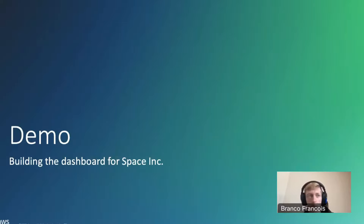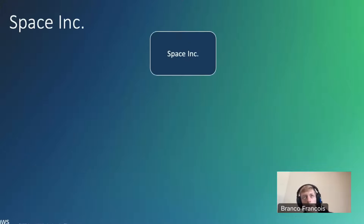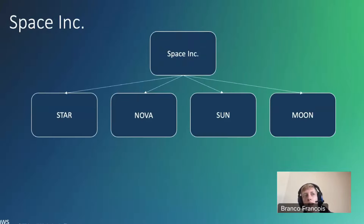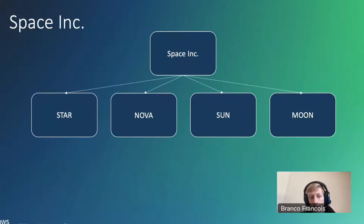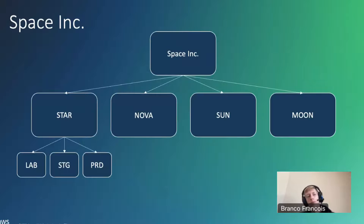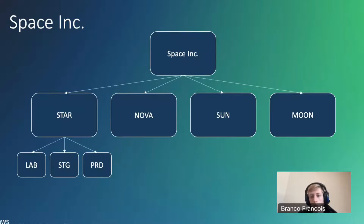I suggest we immediately move on to the demo. First, some explanation about the structure that Space Inc. uses. We have the organization Space Inc., and they have four applications that they are maintaining: Star, Nova, Sun, and Moon. Each application has multiple AWS accounts with multiple AWS resources, and each application organizes these in different environments. We have three environments: a lab environment, a stage environment, and production — with production being the last stage where the actual live application is running.